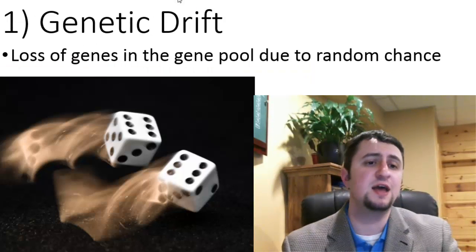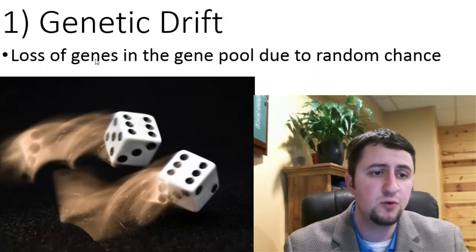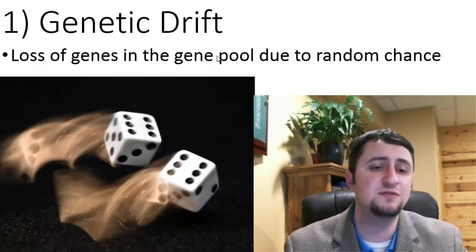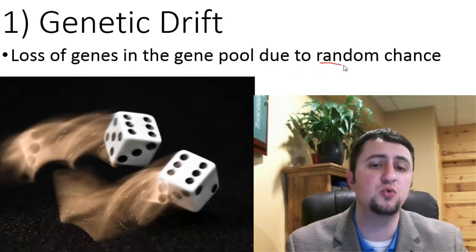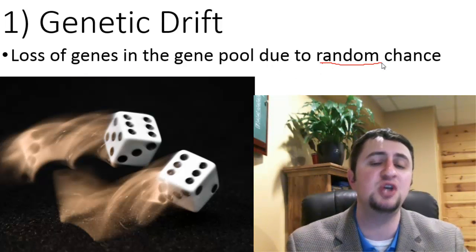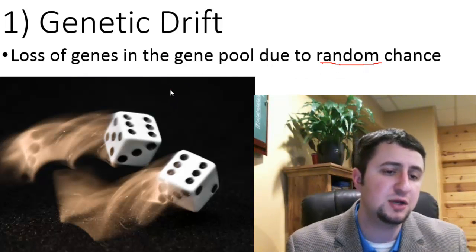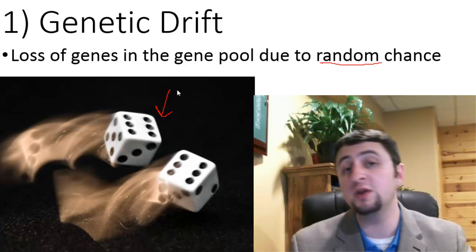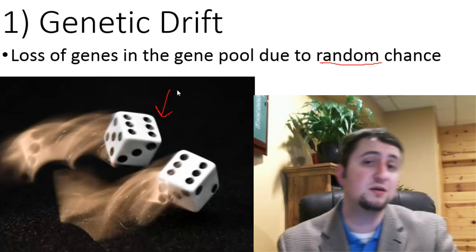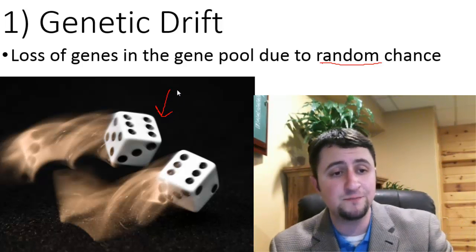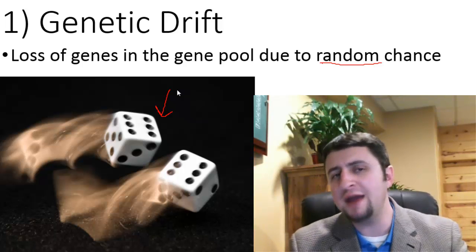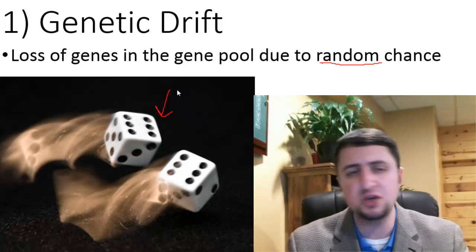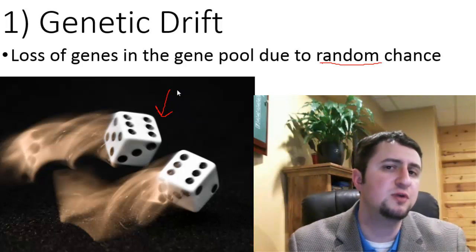The first kind is through genetic drift, where there is a loss of genes in the gene pool due to random chance. Here I have a picture of some dice — dice are a really good example of a random occurrence. Anytime that we have a random chance or random elimination of genes, that is genetic drift.